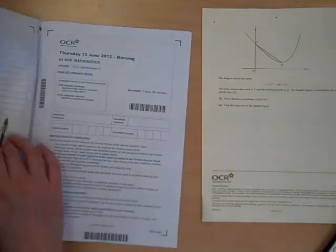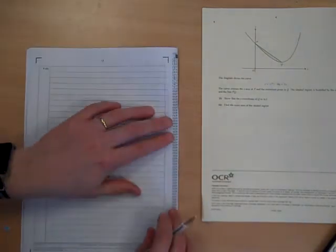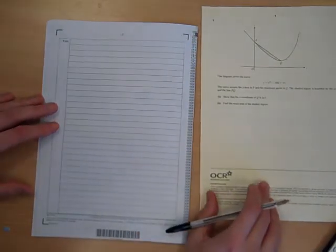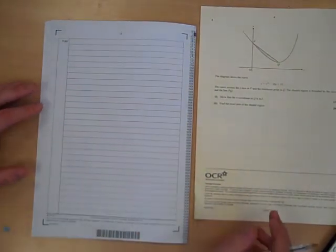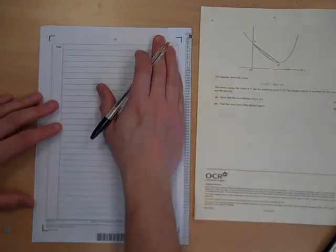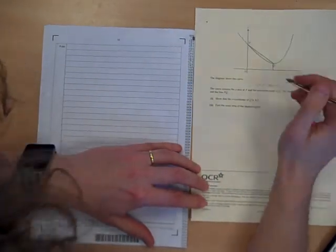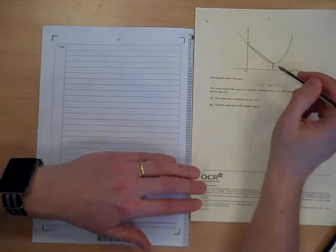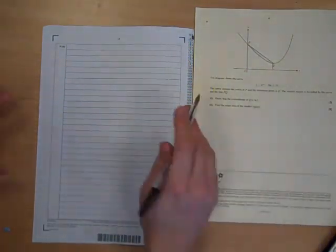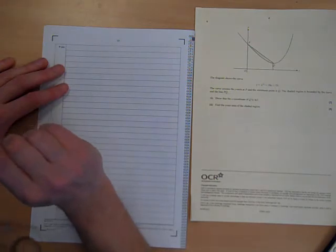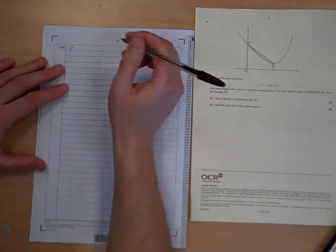Three marks in the bag. Final bit. Find the exact area of the shaded region. We need to do a trapezium, take away the integral of that bit. So we need to know some stuff, don't we? Let's think about the point P.